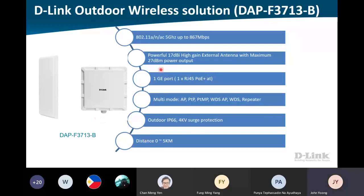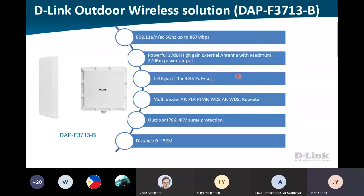The DAP-3713 is a bit different - you can get your own external antenna to increase the DBI higher. By default, it gives you 17 DBI, with 1GE port, IP66, up to 5 kilometers. Please take note this one requires PoE+, but luckily all the D-Link switches are running on PoE+.